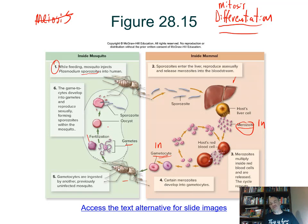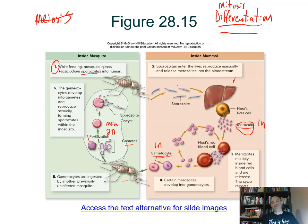Then there is Toxoplasma gondii — shown here forming a cyst within the tissues of some animal host, like a cat. The little individual cells inside are this Toxoplasma parasite. Typically your immune system fights it off. But if you have immunosuppression — for example from HIV progressing to AIDS — your immune system cannot fight it off, and the parasite can invade other organs and cause damage.